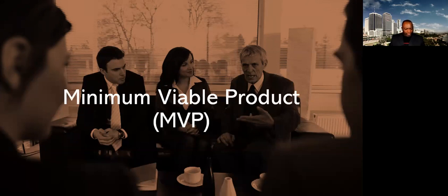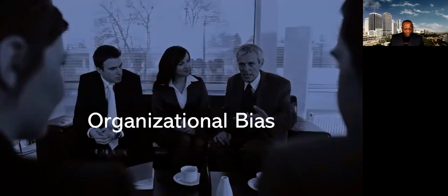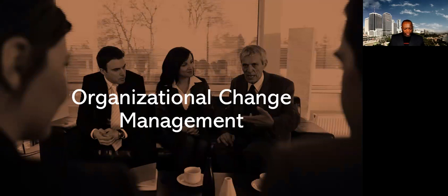MVP, minimum viable product. We've talked about this already. This is the version of a new product which allows a team to collect the maximum amount of validated learning about customers with the least effort. Organizational bias. The preferences of an organization on a set of scales characterized by following core values, exploration versus execution, speed versus stability, quantity versus quality, and flexibility versus predictability. Let's go to our next one. Organizational change management. A comprehensive, cyclic, and structured approach for transition in individuals, groups, and organizations from the current state to a future state with intended business benefits.